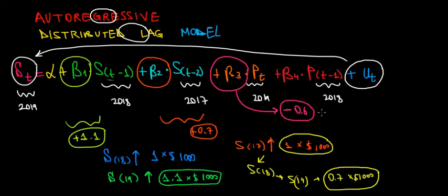The price goes up for the jeans by $1, price goes up by $1, sales in 2019 would go down by minus 0.6 times a thousand, so it'd go down by $600. That would be the intuition by keeping everything else constant. The same logic goes to the last coefficient as well.